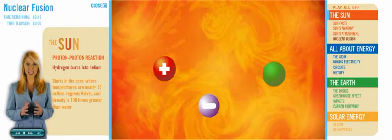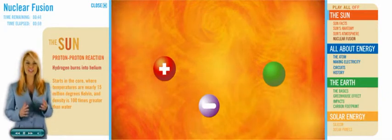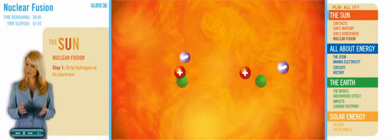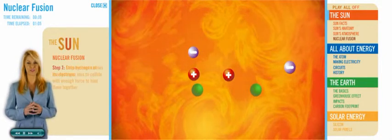This intense environment makes it possible to strip hydrogen of its electrons, creating this flowing mass of free electrons, protons, and the nuclei of the hydrogen. So step one, strip hydrogen of its electrons.